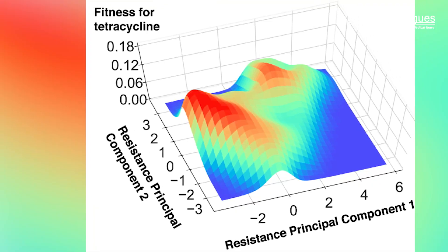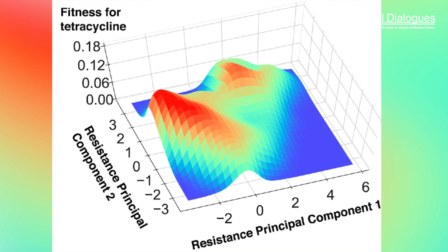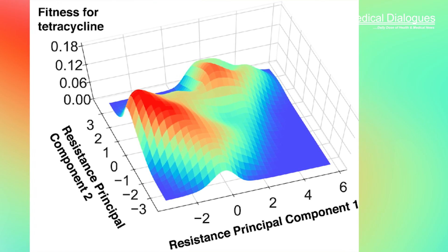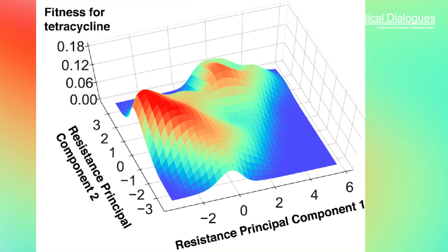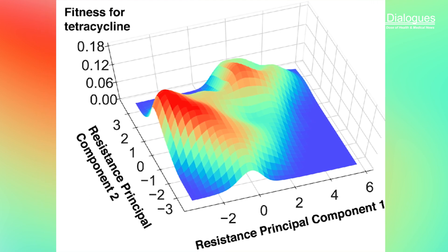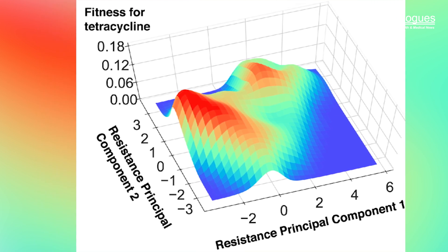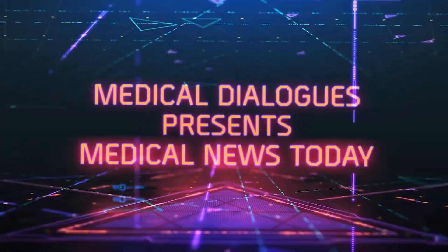Fitness landscapes look like 3D topographic maps. The mountains and valleys on the map represent an organism's evolution. Organisms at the peaks have evolved to have better fitness, or ability to survive in their environment, the researchers explained. By elucidating the fitness landscape, the progression of evolution is expected to be predictable.